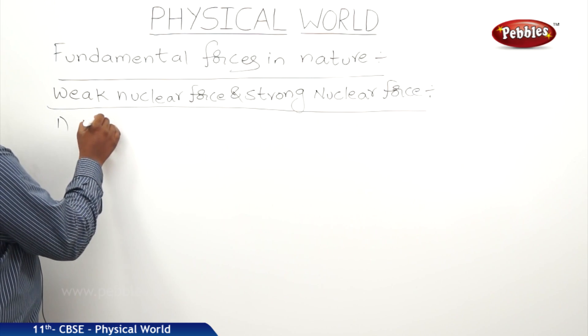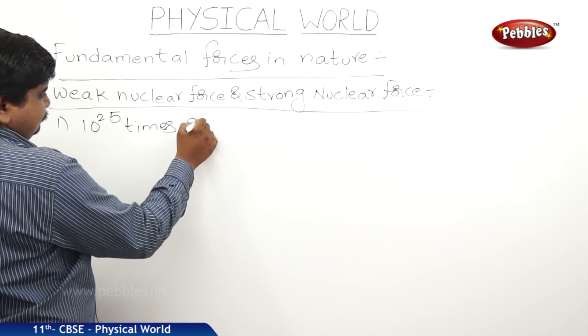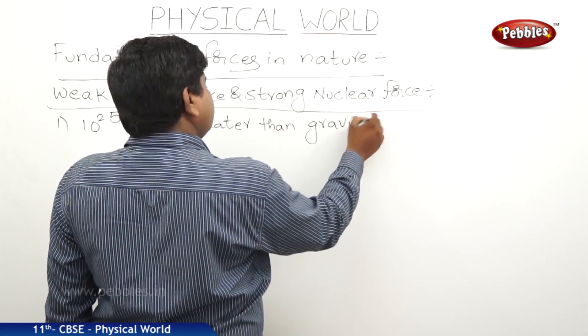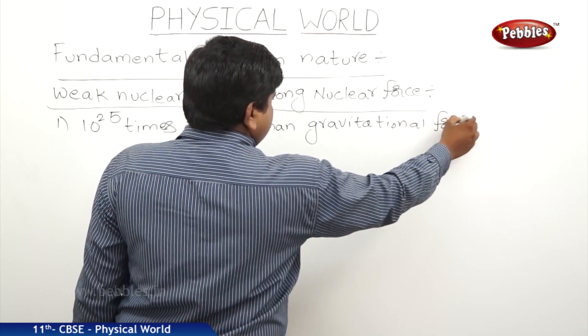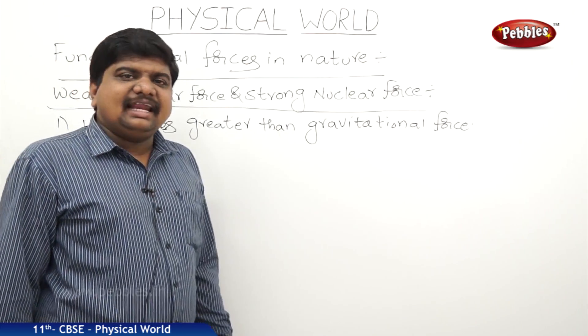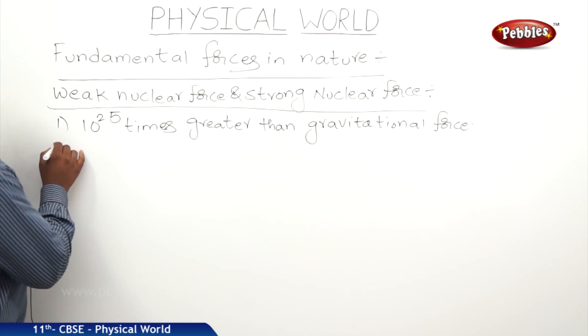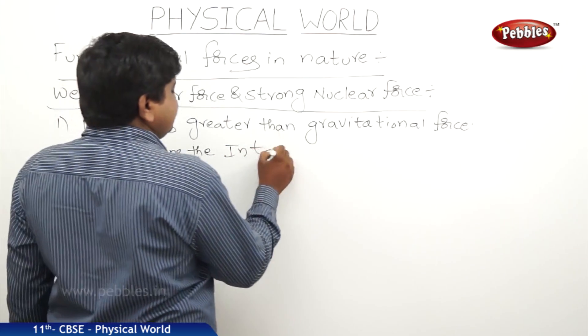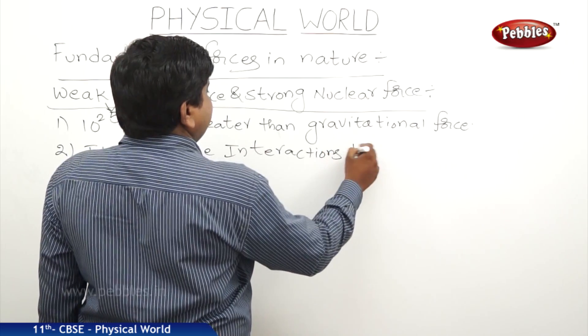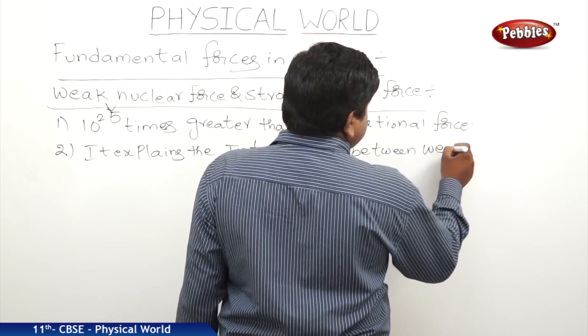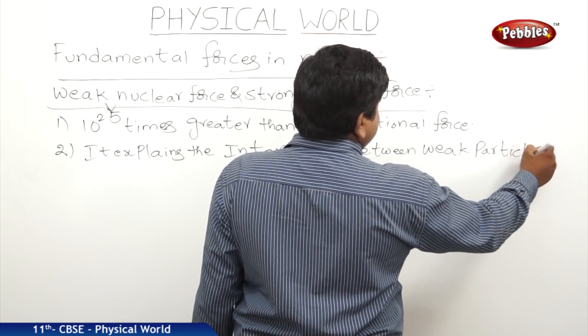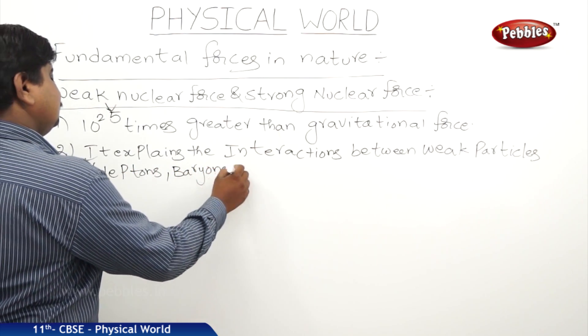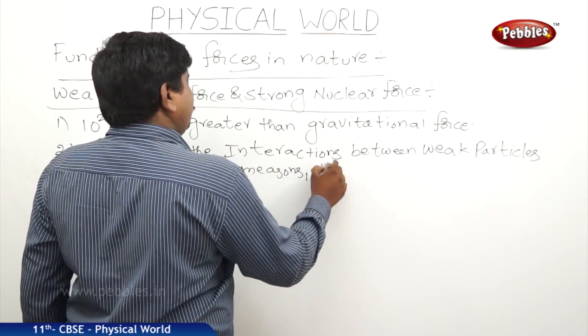Weak nuclear force is 10 to the power of 25 times greater than gravitational force. It explains the reactions or interactions between leptons, baryons and mesons. This explains the interactions between weak particles. What are those weak particles? Leptons, baryons, mesons and many more, quark structures also.